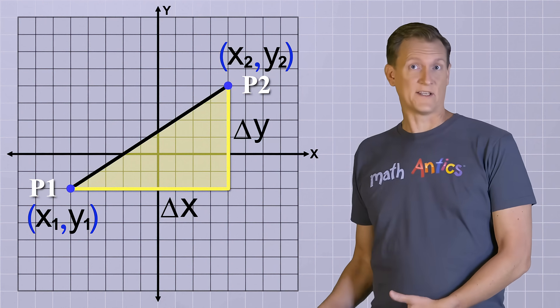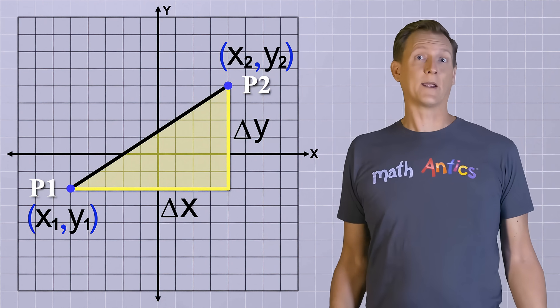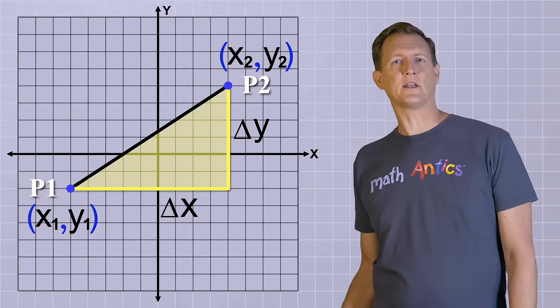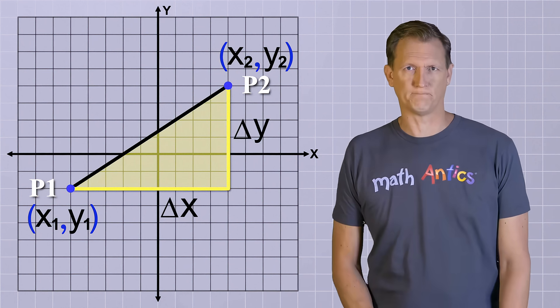We write the 1's and 2's as subscripts after the variables, so we don't mistakenly think it means x times 1 or x times 2. The subscript numbers are simply a way of distinguishing the different variables in the problem so we can keep track of which is which.